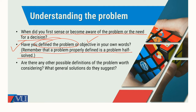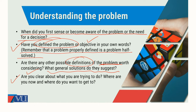The next thing is: are there any other possible definitions of the problem worth considering? It is possible that you have missed some points, and general solutions — what do they suggest? You also need to see that popular decision-making precedents from the past may be available. Are you clear about what you are trying to do? Where are you now, and where do you want to go? You need to know the direction, because if you don't know where to go, then any road will take you there.